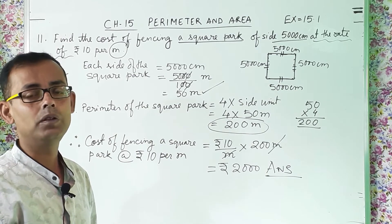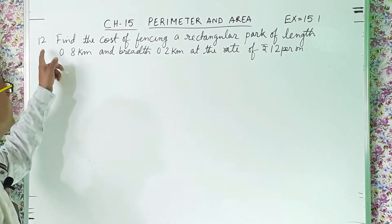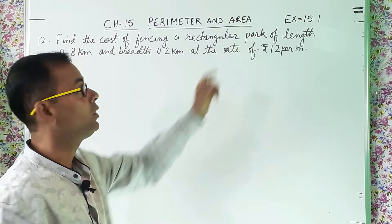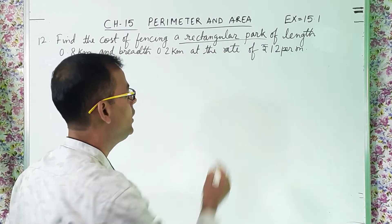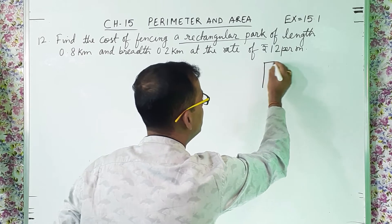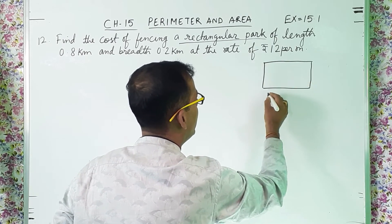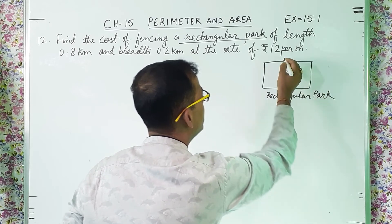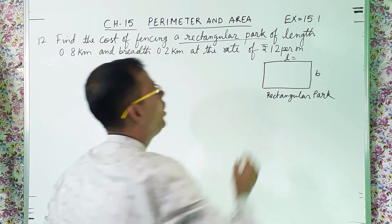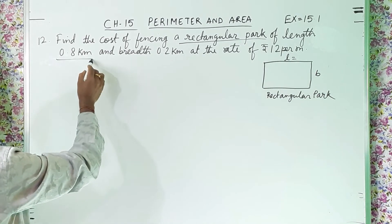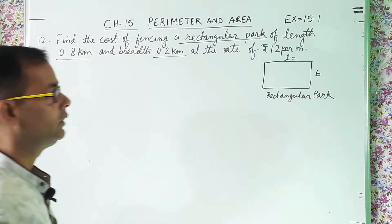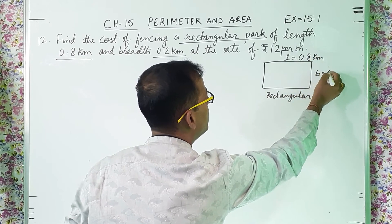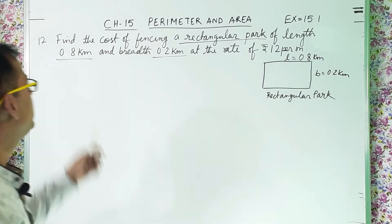Now we will move on to the next sum, question number 12: find the cost of fencing a rectangular park. So let us draw one rectangle — this is the rectangular park. Length is 0.8 kilometers and breadth is 0.2 kilometers. The cost of fencing is at the rate of rupees 12 per meter.